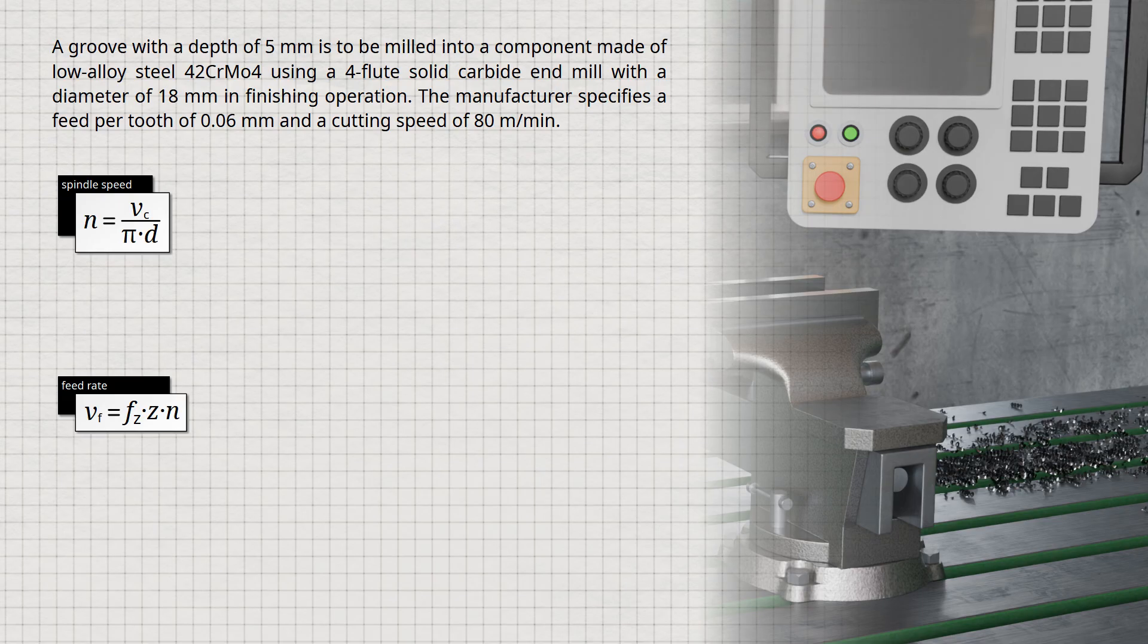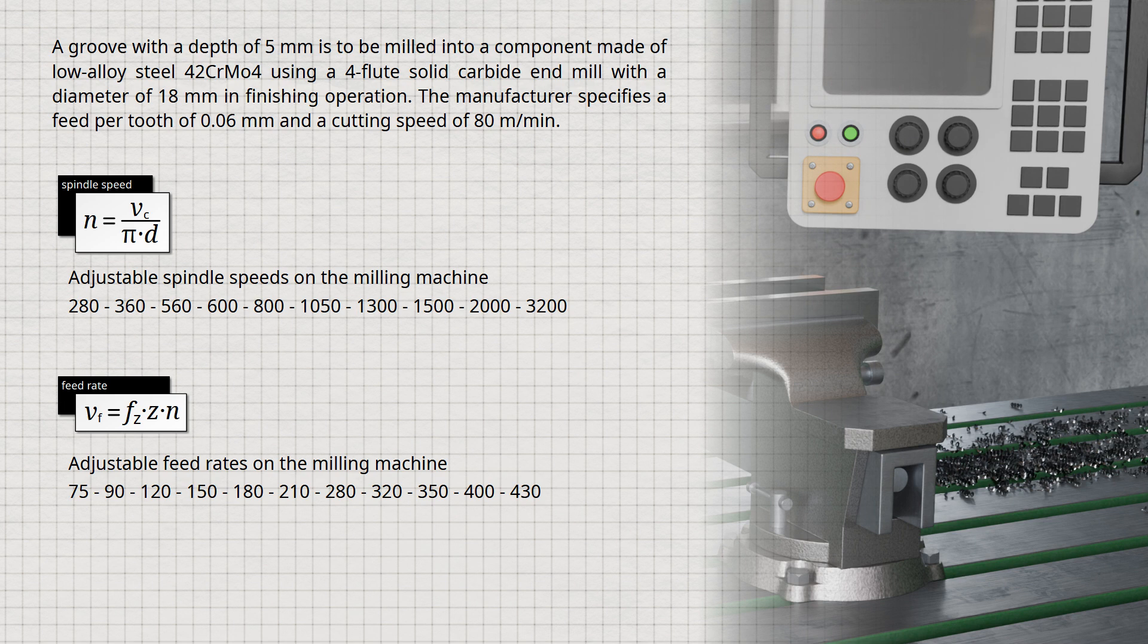Nowadays, spindle speed and feed rate can usually be adjusted steplessly on milling machines. On older machines, however, this may not be possible, as the speeds and feed rates can only be set in increments. In the following, we will consider such a case, in which spindle speeds and feed rates can only be selected from given step values.